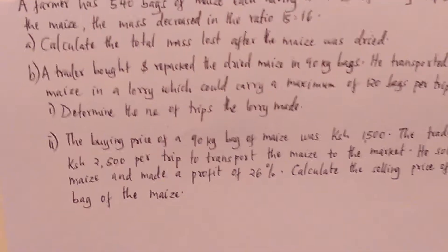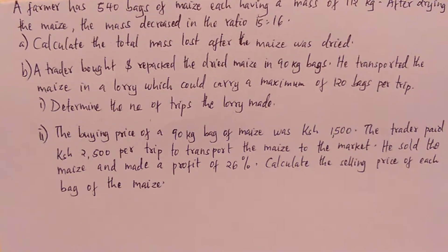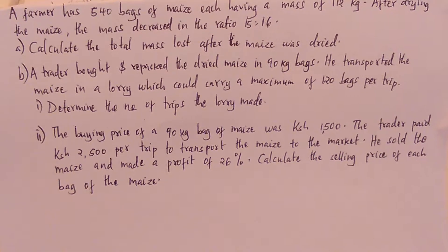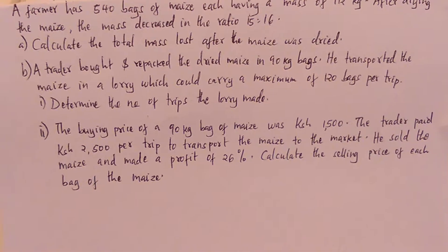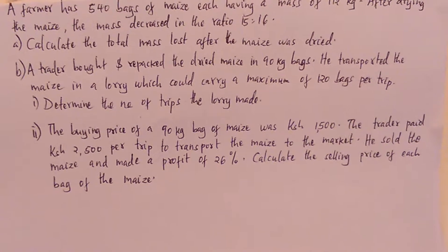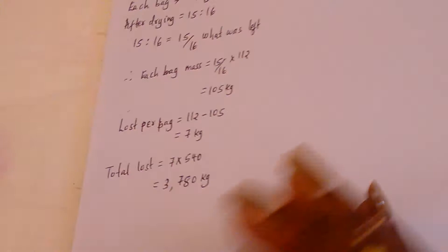Part B: A trader bought and repacked the dried maize in 90 kilogram bags. He transported the maize in a lorry which could carry a maximum of 120 bags per trip. Determine the number of trips the lorry made.